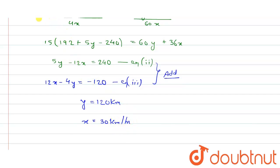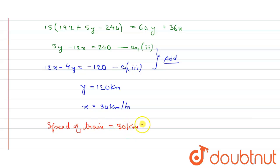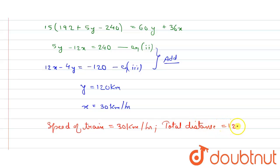Therefore, the speed of the train, that is the usual speed, is 30 kilometers per hour, and the total distance equals y, which is 120 kilometers. The speed of the train is 30 kilometers per hour and the total distance is 120 kilometers. This is our required answer.